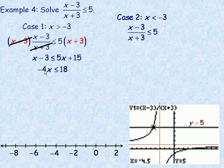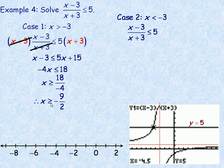Now I'm going to divide out the negative 4 to solve for x. Dividing by a negative means the inequality changes direction. So 18 over negative 4 reduces to negative 9 halves, giving x is greater than or equal to negative 9 halves. Notice again, when I divide by negative 4, the inequality changes direction — that's true whenever you multiply or divide an inequality by a negative.